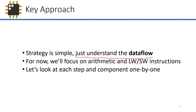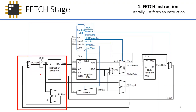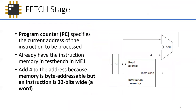The key strategy is simple: just understand the data flow. For now, we'll focus on arithmetic and load/store instructions. The first step is the fetch stage — literally just fetching an instruction. Your instruction memory takes an address input, and for that given address it outputs the instruction we need to decode. Fetching consists of two things: providing the address given by the program counter, and updating the program counter.